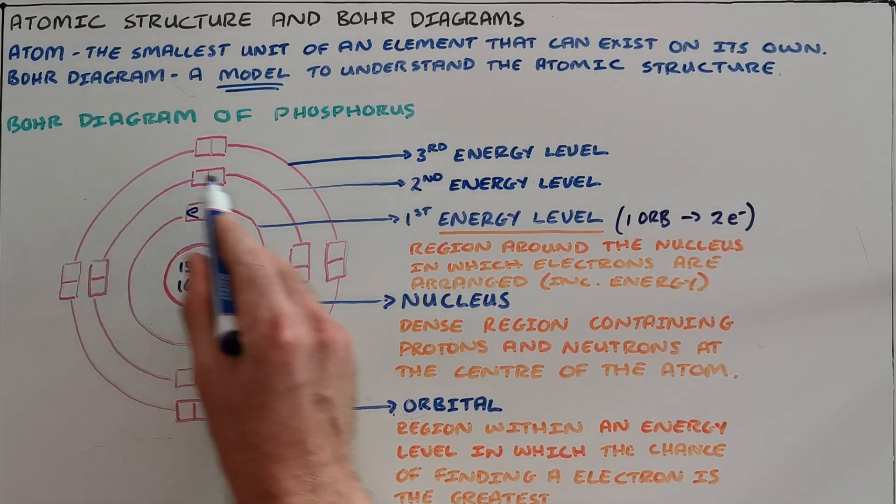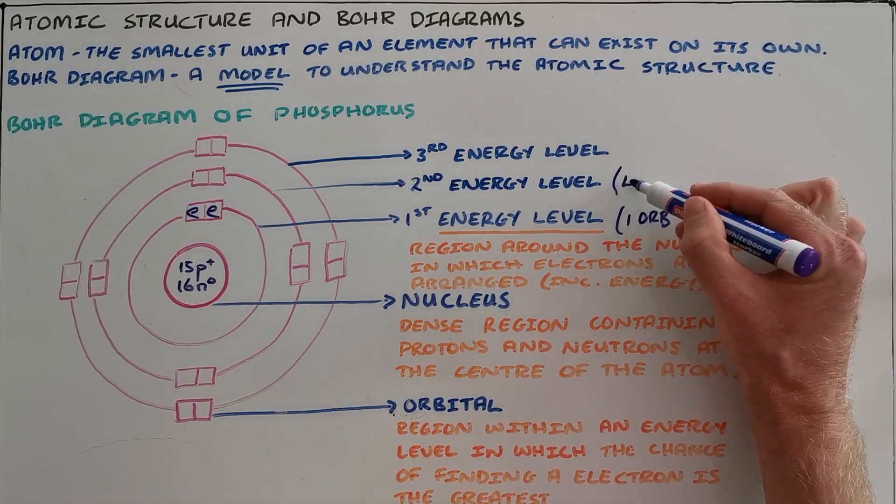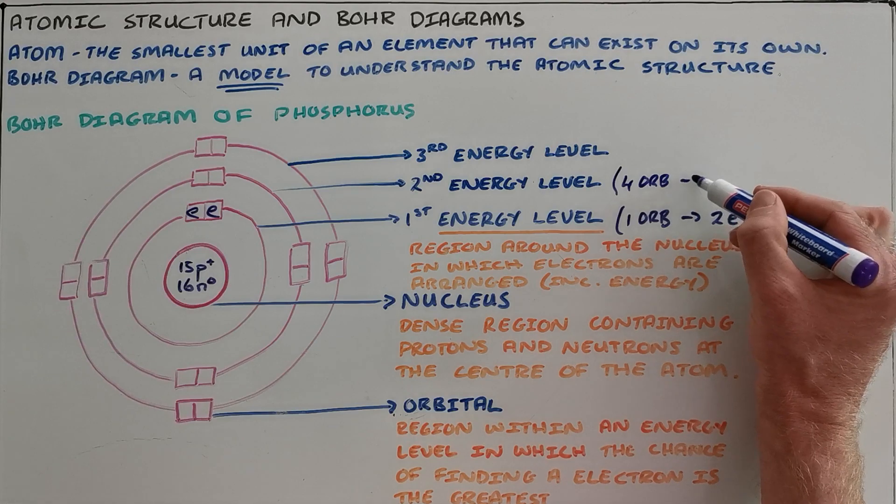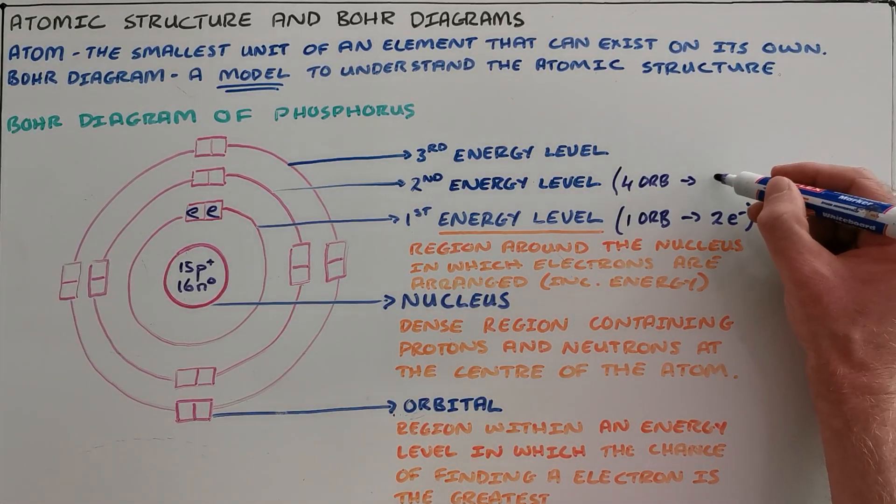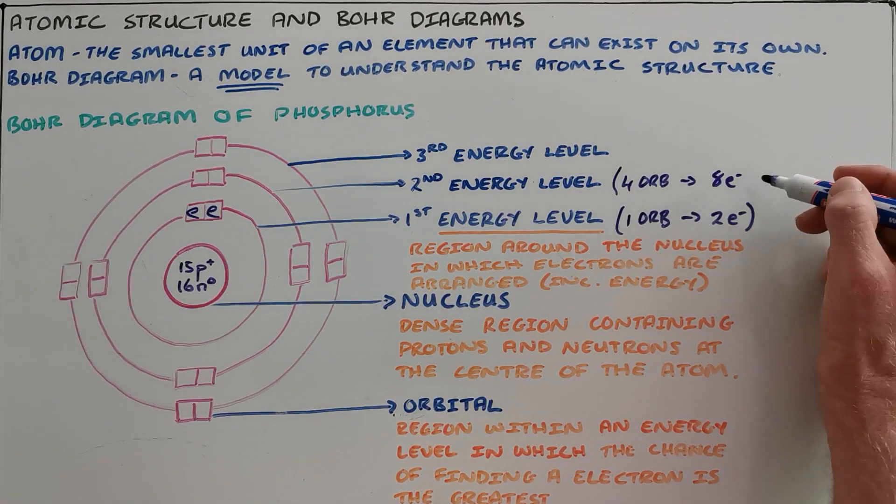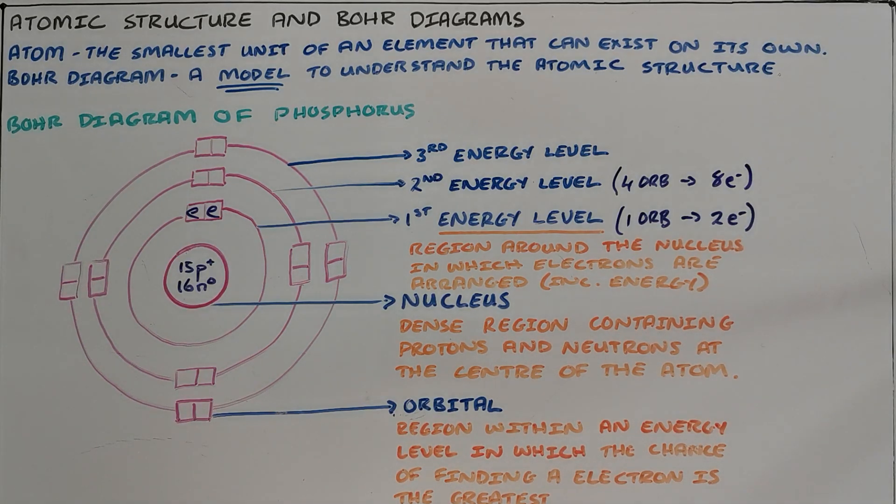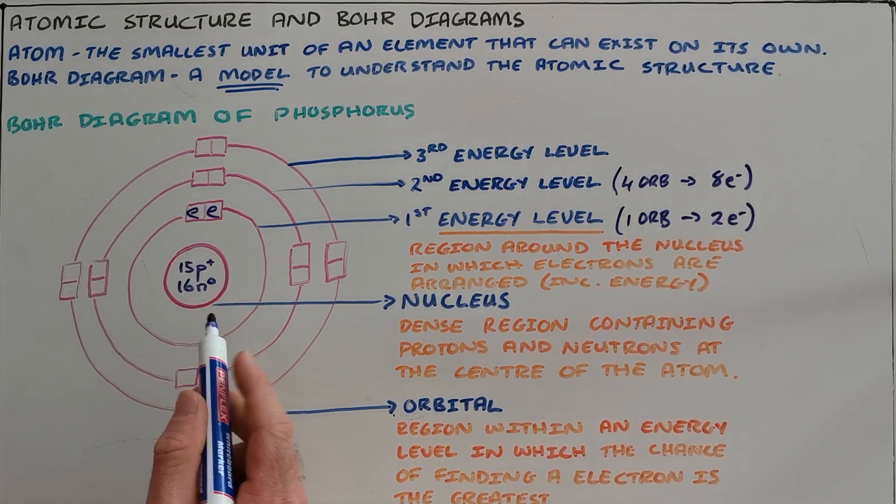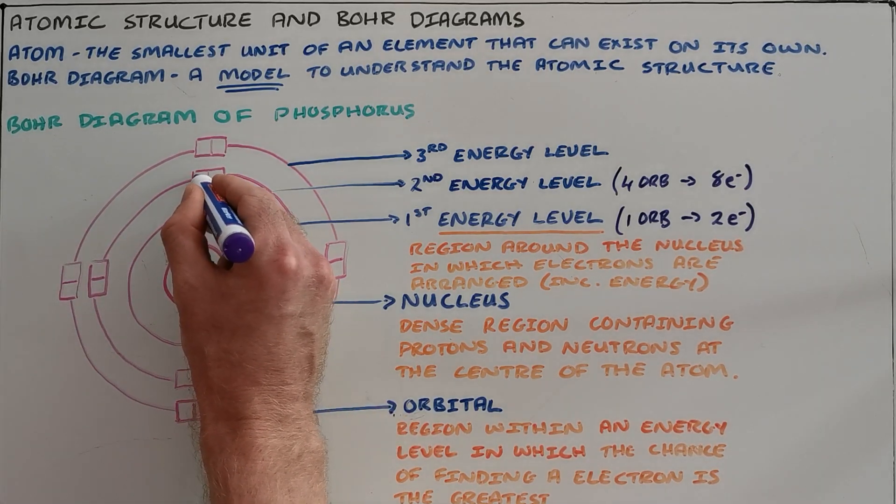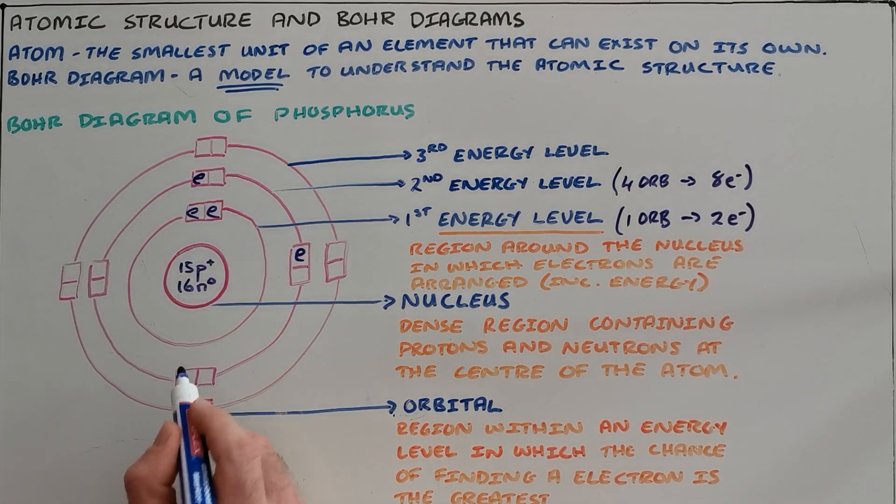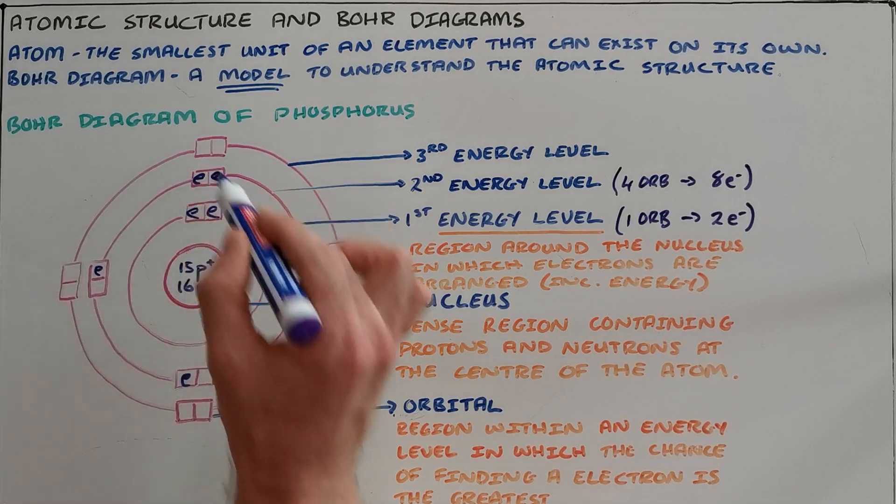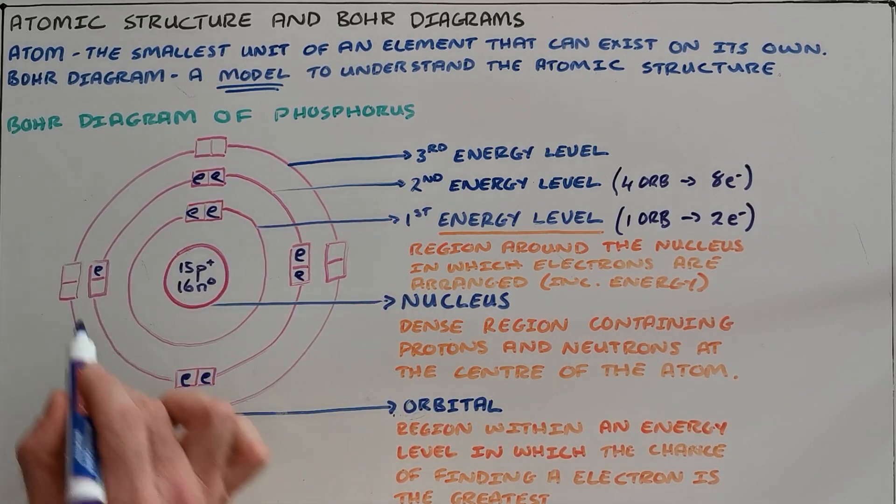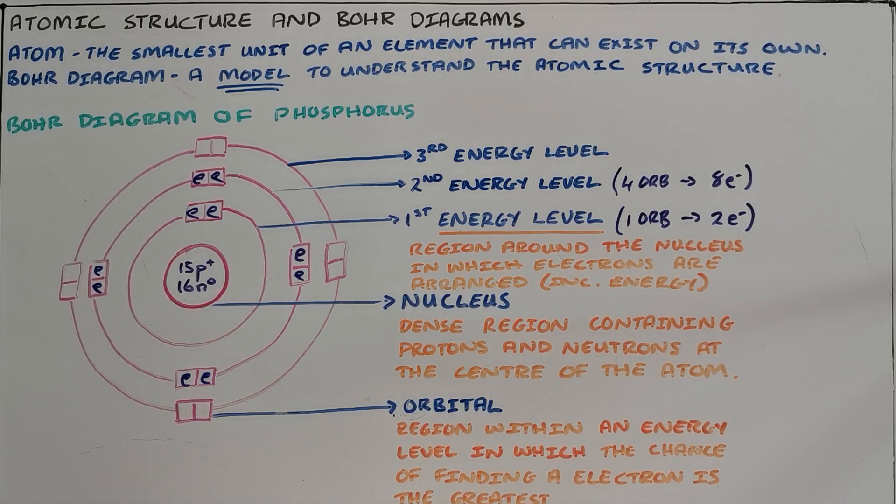We can see from this drawing here that the second energy level contains four orbitals. Those four orbitals are spaces within which the electrons can move. Four orbitals containing two electrons each, which means that the second energy level can hold a maximum of eight electrons. A phosphorus atom has 15 electrons, which means we place the next eight electrons. Note here that one electron is placed in each orbital before the orbitals are then filled with a second electron, much like seats on a bus where each person will sit on their own seat before somebody is forced to share.